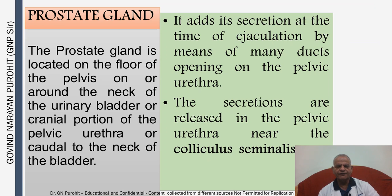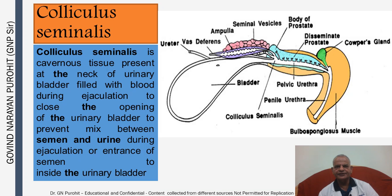The prostate gland is located on the floor of the pelvis around the neck of the urinary bladder, or the cranial portion of the pelvic urethra, caudal to the neck of the bladder. It adds its secretion at the time of ejaculation by means of many ducts opening on the pelvic urethra, and the secretions are released near the colliculus seminalis. The colliculus seminalis is a cavernous tissue present at the neck of the urinary bladder. It is filled with blood during ejaculation to close the opening of the urinary bladder, preventing mixing of urine with semen or entry of spermatozoa into the urinary bladder.